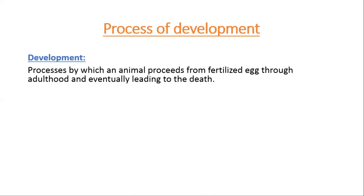Development is simply the processes by which an animal proceeds from a fertilized egg through adulthood, and eventually leading to death. It includes the formation of cells, divisions of cells, formation of tissues, then organs, which mature to form an adult.